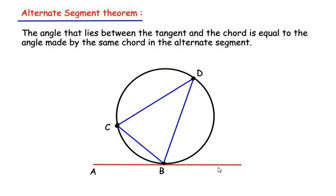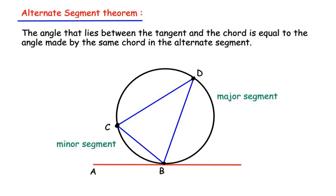The alternate segment theorem states that the angle between the tangent and the chord is equal to the angle made by the same chord in the alternate segment. Here AB is a tangent because it touches the circle at only one point, which is B. We have two chords: chord BC and chord BD. Chord BC divides the circle into a minor segment and a major segment. If the chord makes an angle x with the tangent in the minor segment, then the same chord makes angle x in its alternate segment, the major segment.